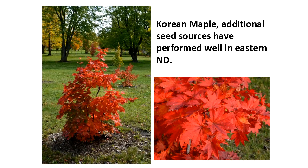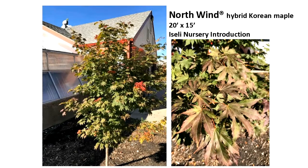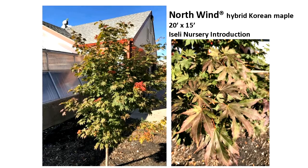Isley Nursery has taken it a step further — similar to what we're doing in our program — crossing the hardy Korean maple with Japanese palmate maples. Most of those hybrids have not been hardy here to date; we're a test location. All but one — the cultivar North Wind — has been very hardy for us both in town and at the Absaraka Horticulture Farm. North Wind comes out as a bronzy green in spring, has attractive foliage through summer, and gets an orange-bronze color in fall. It also drops its leaves in winter, unlike the straight Korean maple.